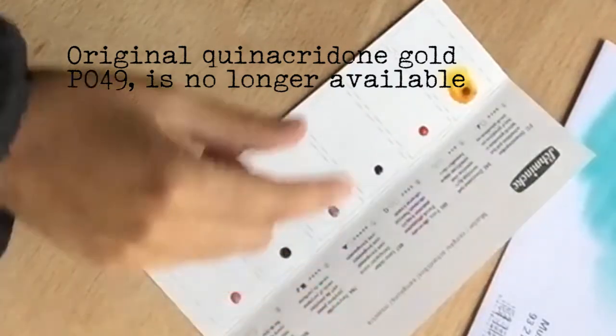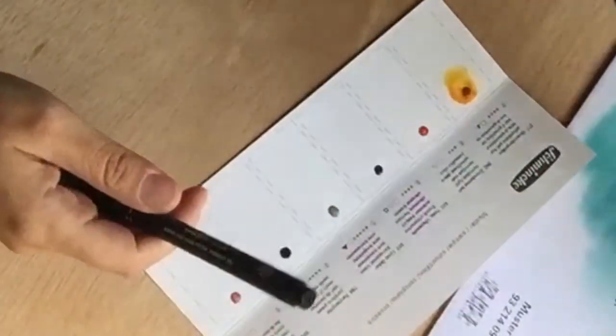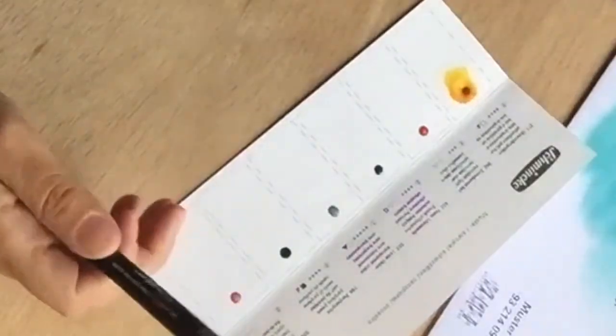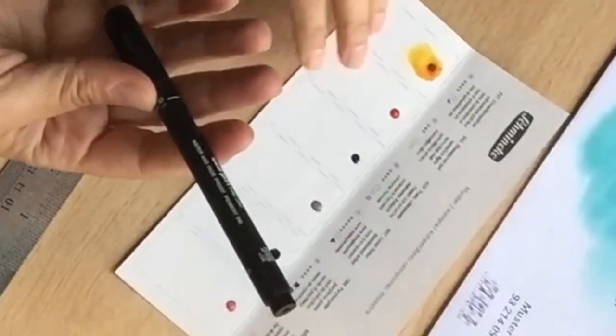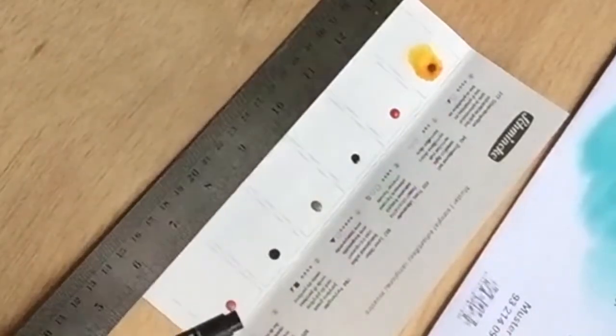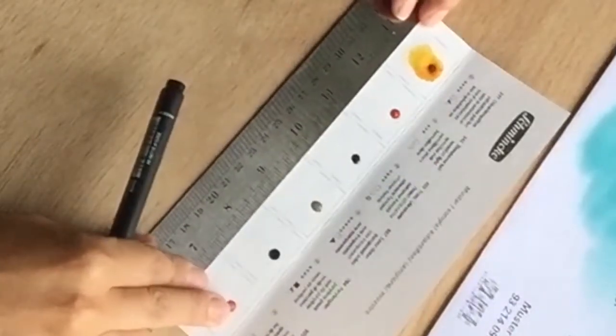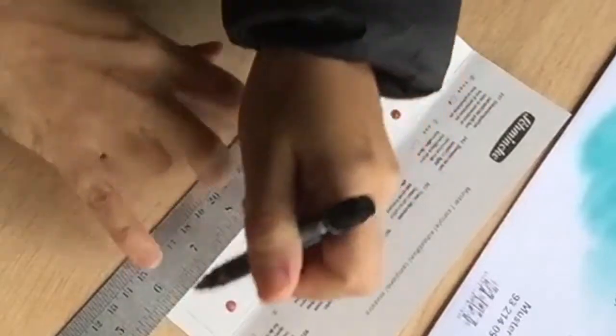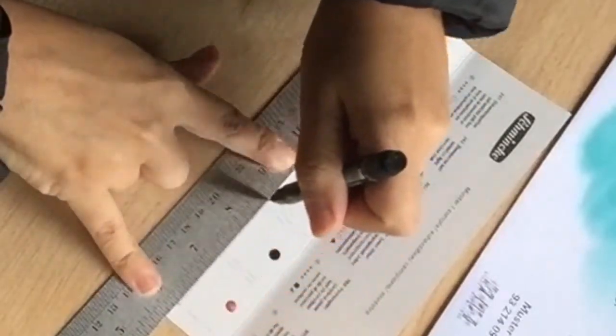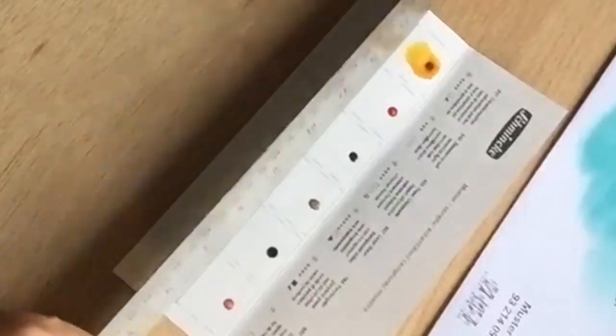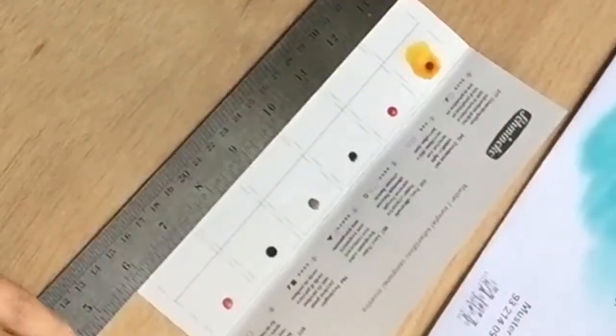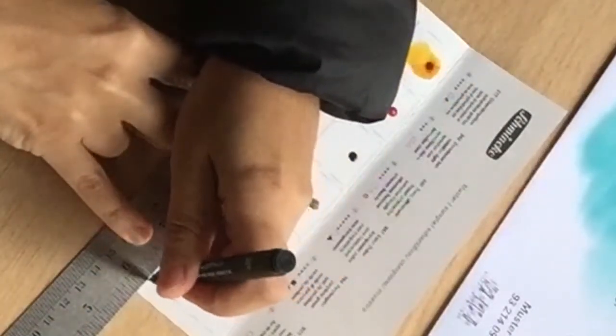I'm going to do a black line with a permanent ink, fade-proof pigment ink pen to see how transparent or opaque they are with a lot of pigment.